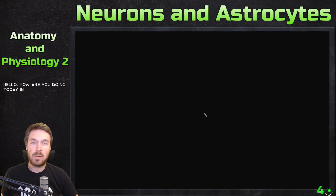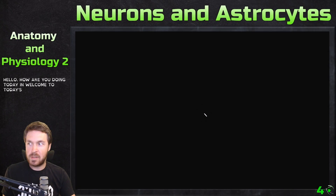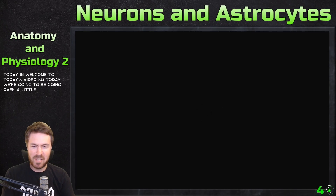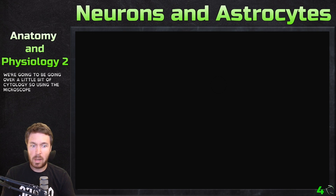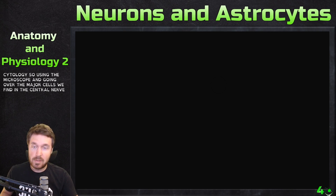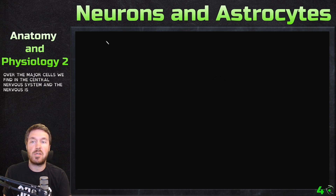Hello everyone, how are we doing today and welcome to today's video. So today we're going to be going over a little bit of cytology, using the microscope and going over the major cells we find in the central nervous system, or in the nervous system in general.